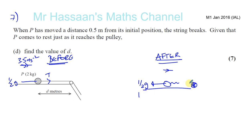Now the string is broken, so there's no tension now. And let's say this was the initial position, so it's moved 0.5 meters at the point where the string breaks. And the total distance is D, which we have to find. So what we know is P comes to rest just as it reaches the pulley. So it travels this distance, what's left, until it reaches the pulley. So D is equal to 0.5 plus X. That's what D is. So now we've got to find this distance X.